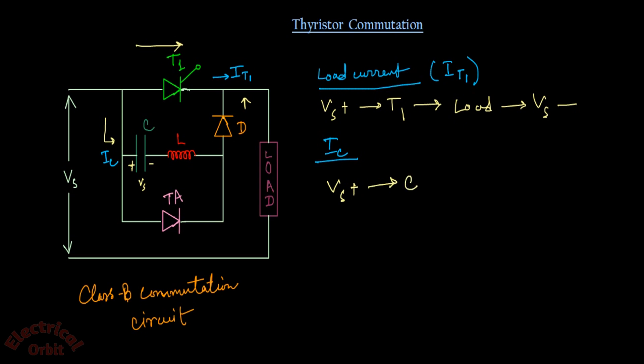The current flows from VS through the capacitor C, to inductor L, to diode D, to the load, and back to VS minus. This is the charging path, and that's why the capacitor is charging to a value of VS.